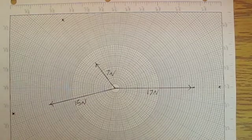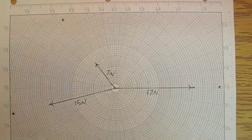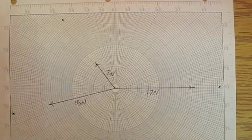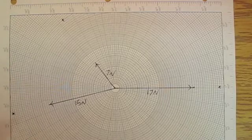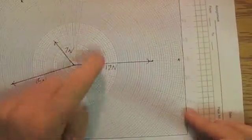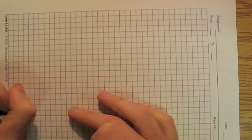Now what I want to do is add these tip to tail. So adding them tip to tail, what we're going to do is we're going to start drawing them one at a time. And we're going to use different graph paper for that. So the first thing that I'm going to do is draw this one right here. That's 17 newtons. That's pretty easy. So I'm basically going to start here.